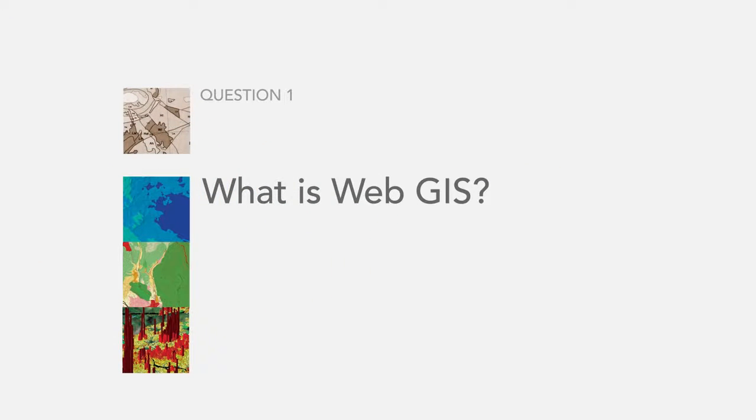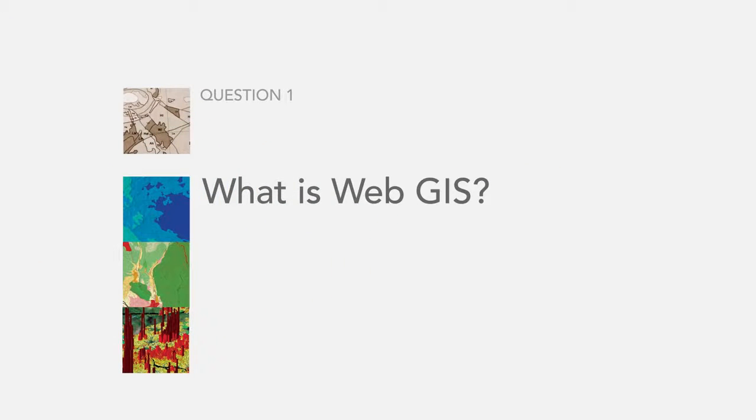The first question is: what is WebGIS? Simply put, WebGIS is a new pattern for implementing a modern GIS. It's based upon web services — web services that come from the cloud, ArcGIS Online, or web services that you publish using your own ArcGIS server, or typically a combination of both.